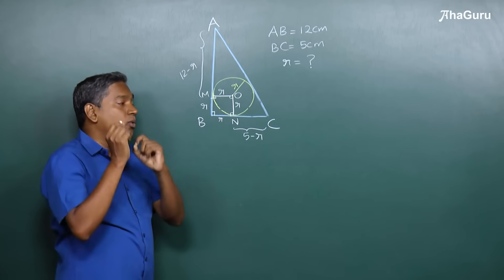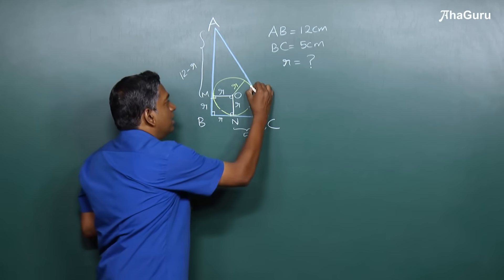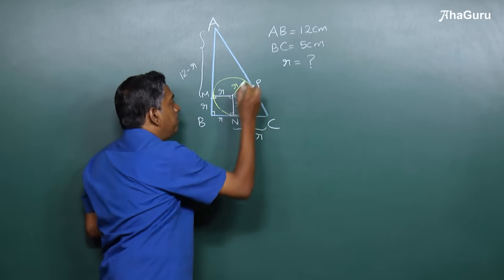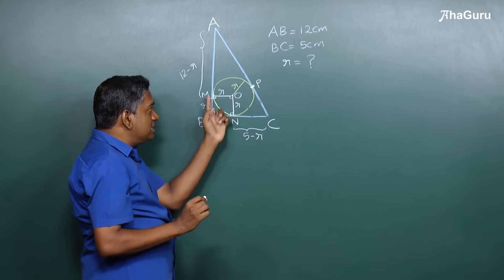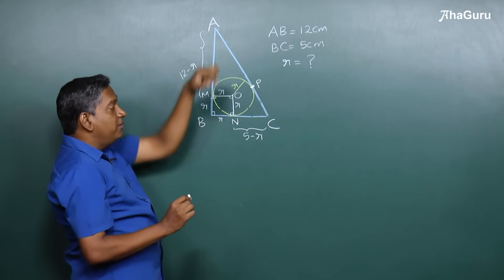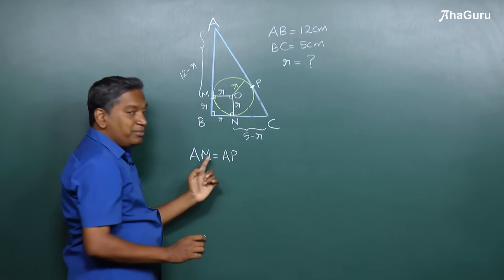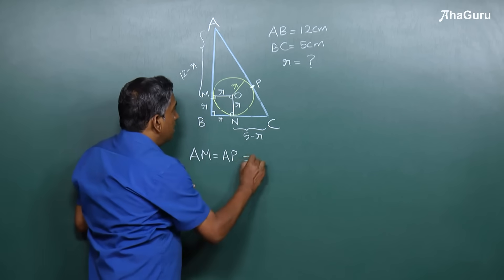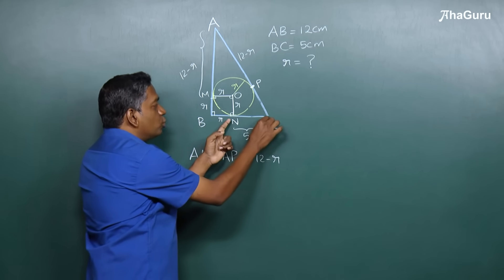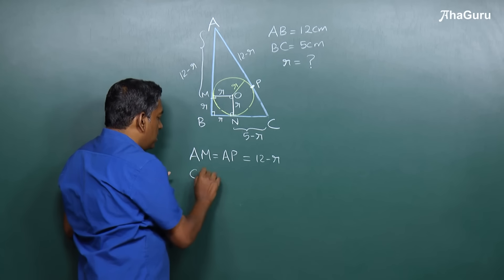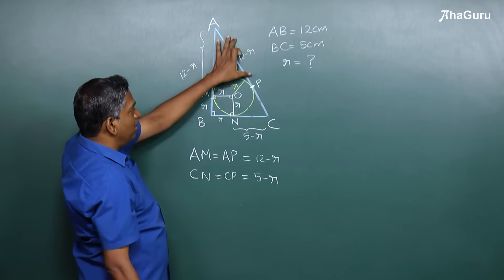Now comes the important property we are going to use. If we call this point P, you can see that AM and AP are two tangents to the circle from point A. We know the theorem that two tangents from an external point must be equal in length, which means AM equals AP, so AP must also equal 12 minus R. Similarly, the two tangents from C — CN and CP — must equal 5 minus R.